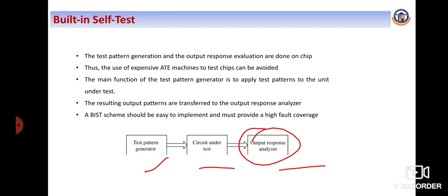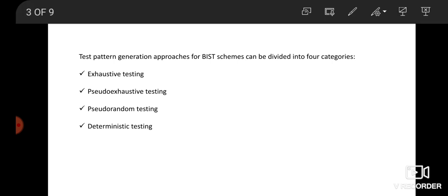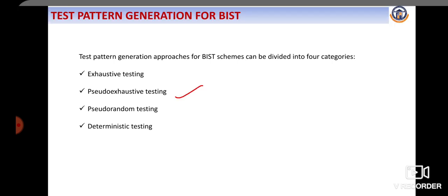Through this concept we must provide high fault coverage. What are the test pattern generation methods used in BIST? In general, test pattern generation can be divided into four categories: exhaustive testing, pseudo-exhaustive testing, pseudo-random testing, and deterministic testing. In this, we are mainly focusing on pseudo-exhaustive testing.